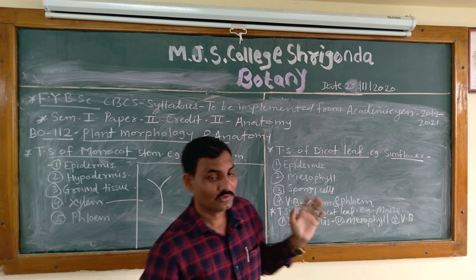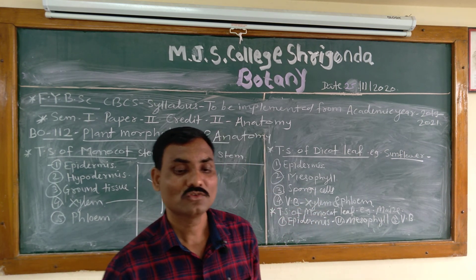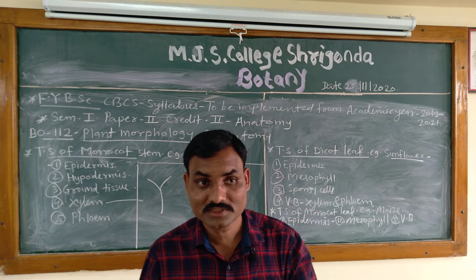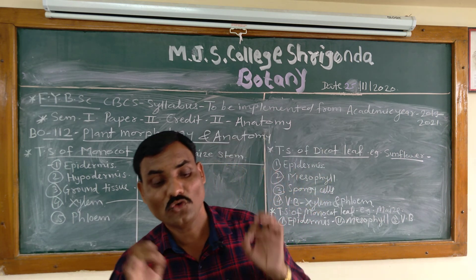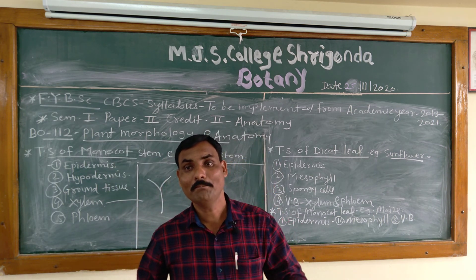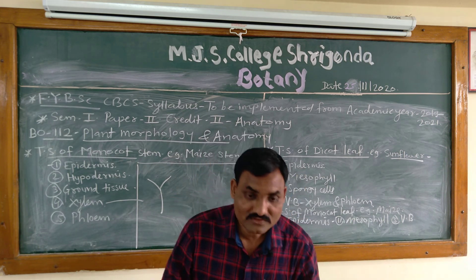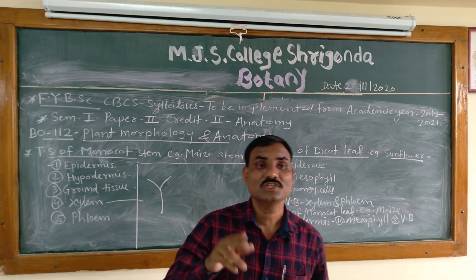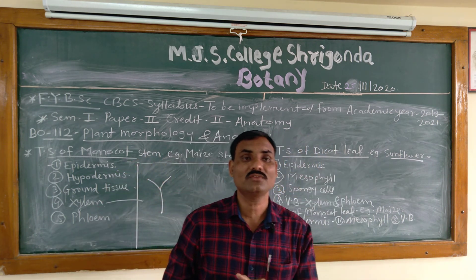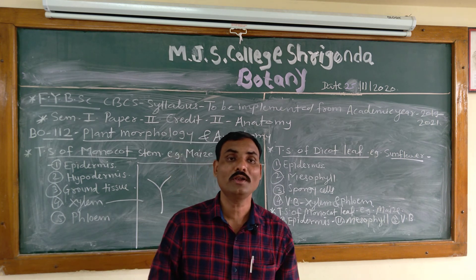Regarding mesophyll cells in monocot leaf: the mesophyll tissue is not differentiated into palisade and spongy cells. Mesophyll is composed of isodiametric, compactly arranged cells. Mesophyll cells are absent in the midrib region; this space is occupied by sclerenchymatous patches which extend from vascular bundles to the upper and lower epidermis.